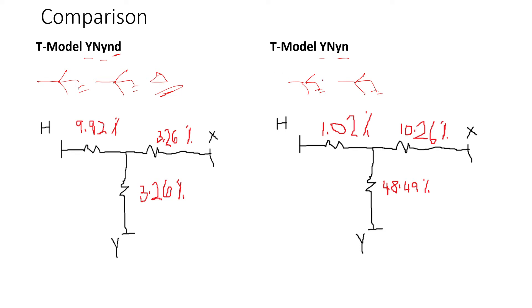So here is the T-model I built for this transformer. So the high side zero sequence impedance is 9.92%, the X side is 3.26%,